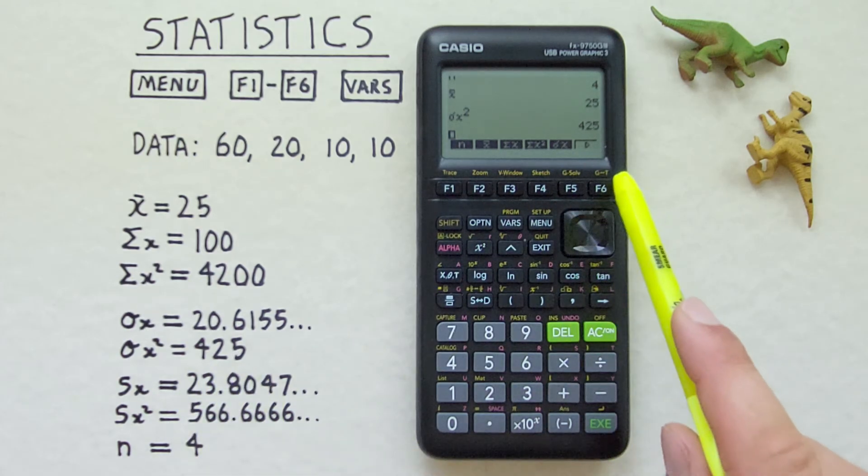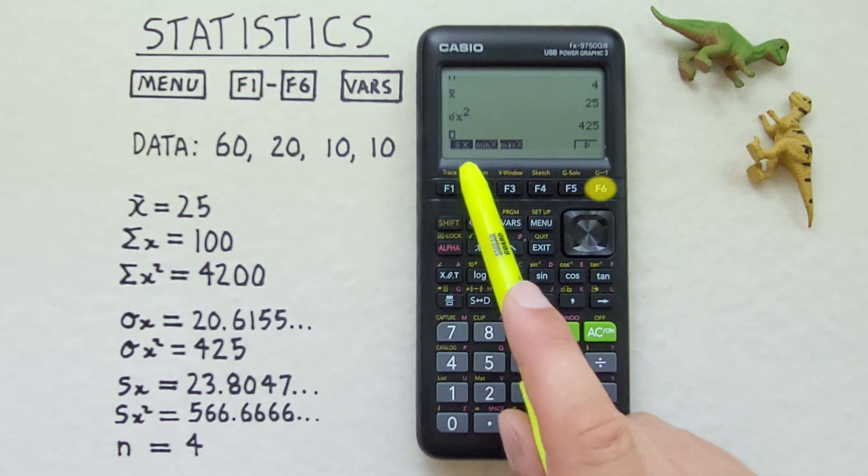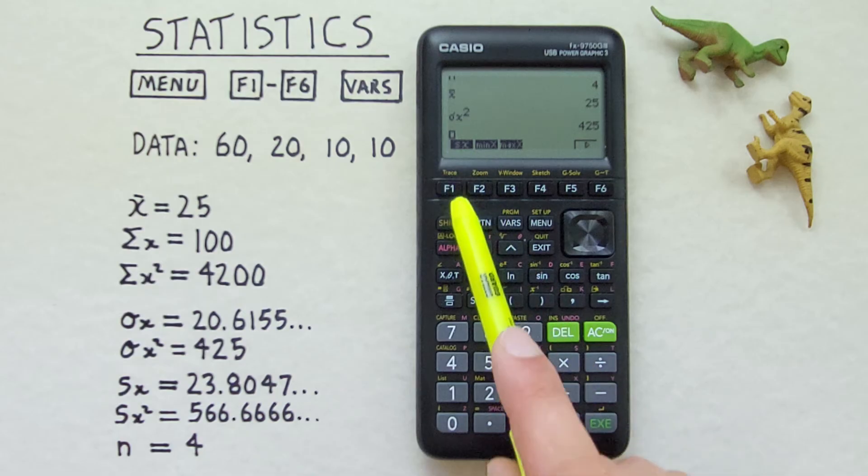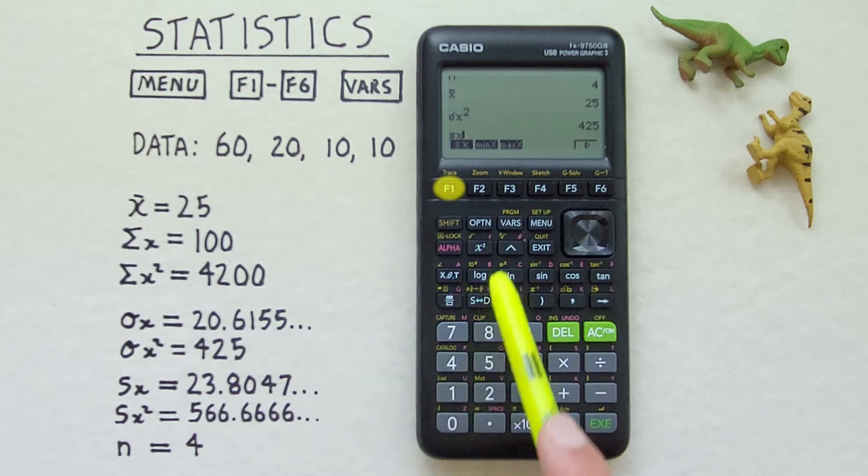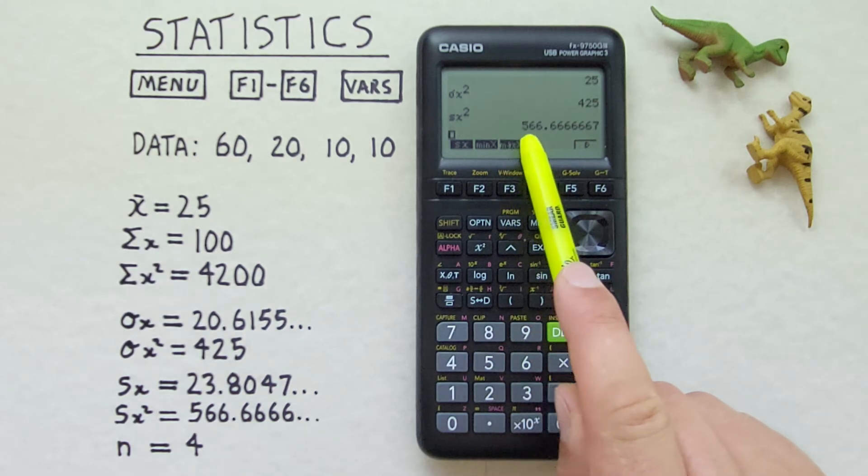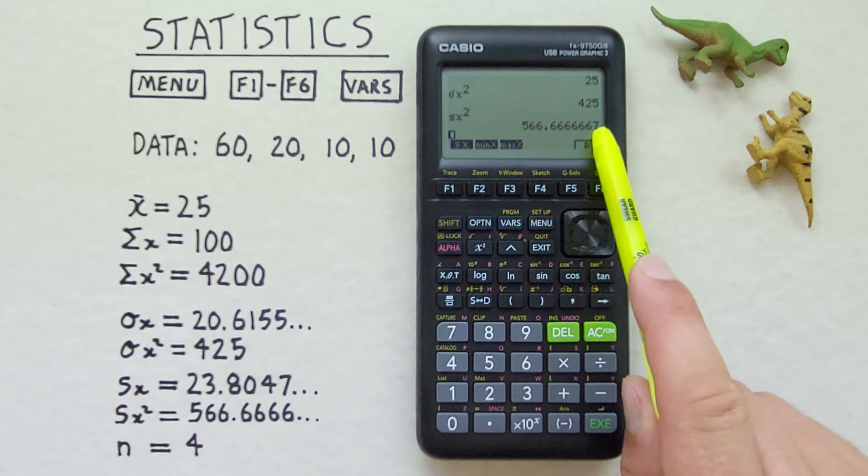If we scroll over with F6. We can also do the same with our sample standard deviation to find sample variance. So we choose that. Square it. And press exe. And we see we get a sample variance of 566.666 etc.